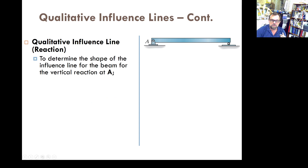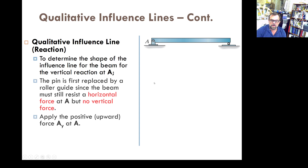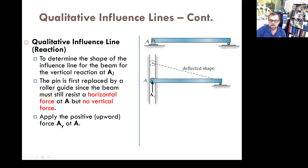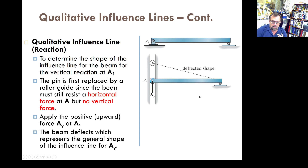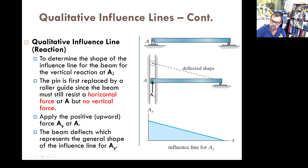So the steps: first, release the constraint — if releasing a reaction, put a guided roller. Then act in the direction of the reaction you want to calculate. Once you apply force in this direction, it's going to pivot on that point and go up. This is going to be the influence line. One important thing I didn't mention: this height here is 1 — that's the value of the reaction when the unit load is acting directly on top of the support. We did this example before, so you can go back and recheck.